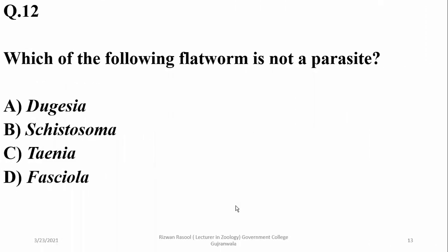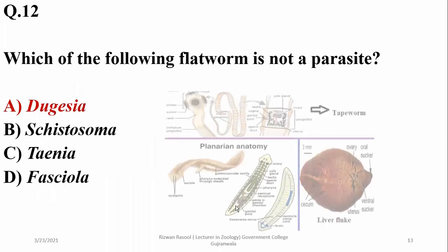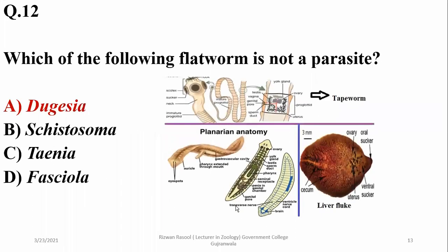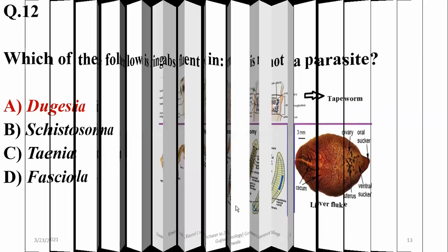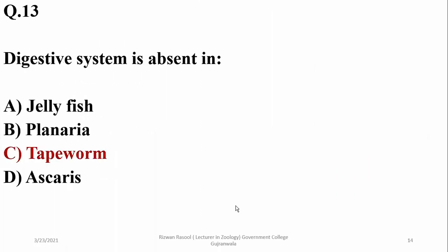Question eleven: among the given platyhelminthes, Dugesia or planaria is free-living while others in the list are parasitic. The digestive system is absent in the tapeworm, being a parasite.